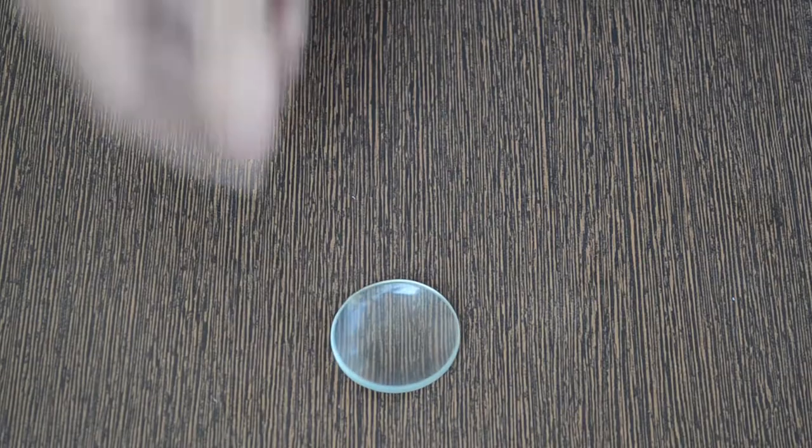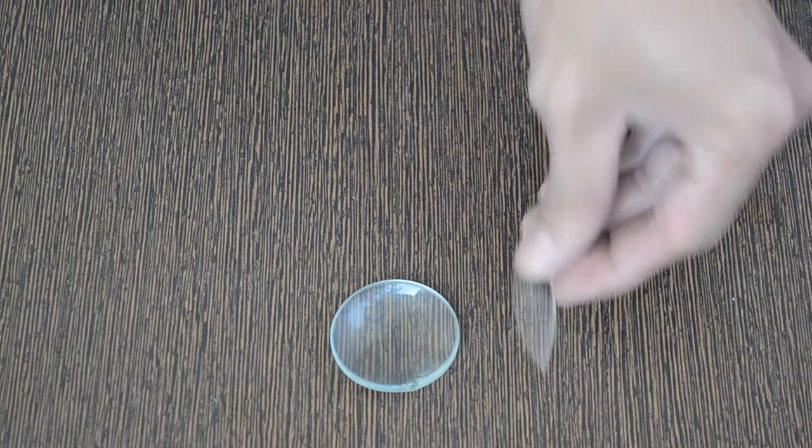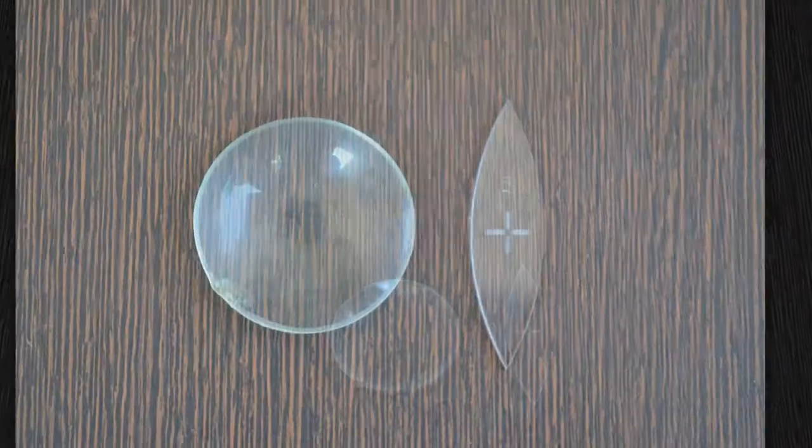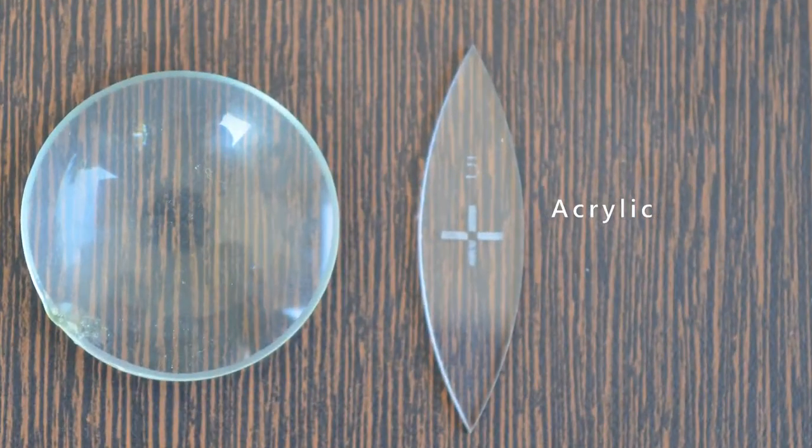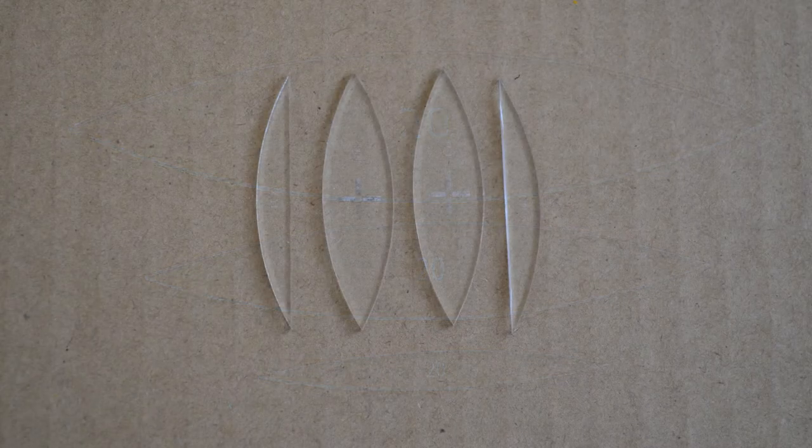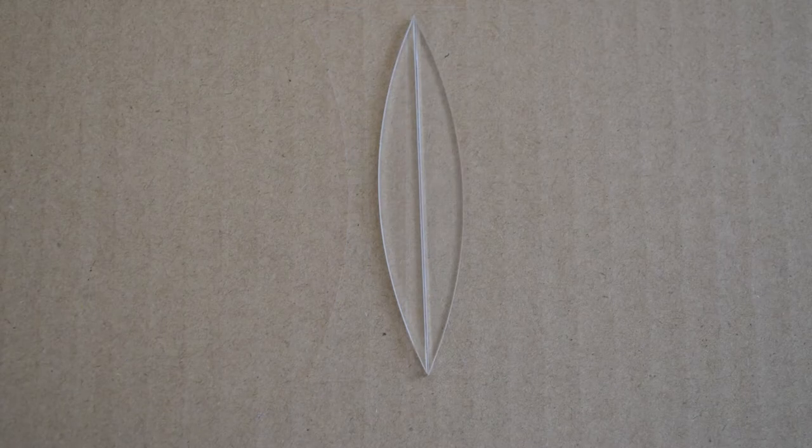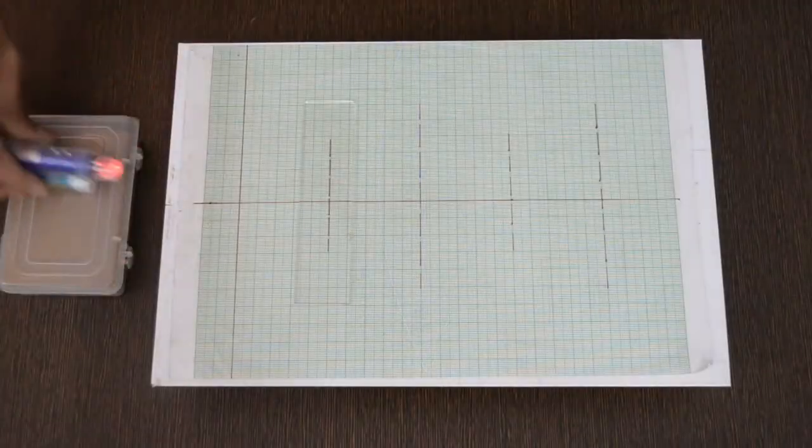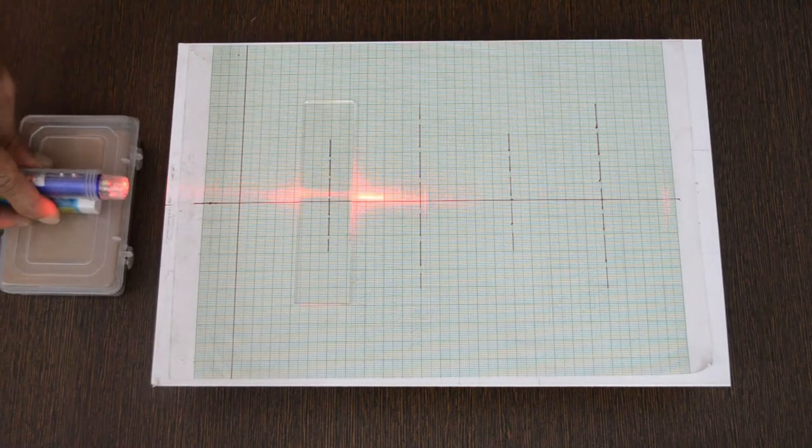Instead of a regular bi-convex lens made from glass, we will use a bi-convex profile made from acrylic. Different profiles of lenses made with acrylic enable us to study ray paths better. More on that later. Let's cover the basics first.